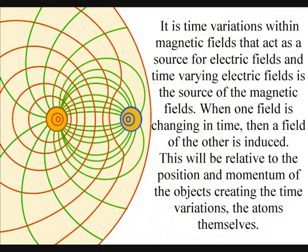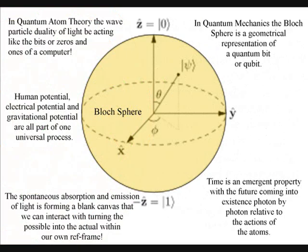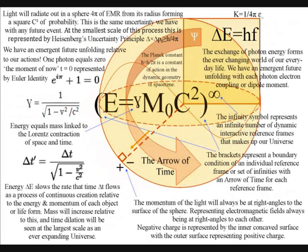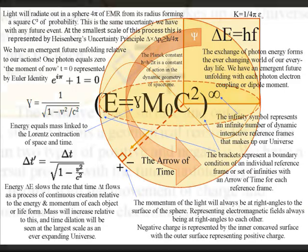The reason why strings need eleven dimensions and spheres only need three is because the two-dimensional surface of a sphere can form a dynamic membrane, or what I like to call a two-dimensional boundary condition. In our everyday life, this is represented by the movement of positive and negative charge.